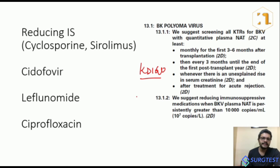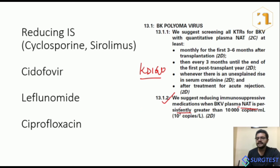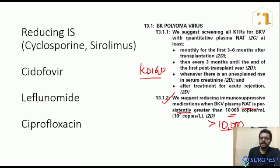The key threshold to remember: when plasma BK virus levels are persistently greater than 10,000 copies per ml, you can consider reducing the immunosuppressive therapy. The word 'persistently' is important, and you must remember the number — greater than 10,000 copies per ml. The mainstay of therapy in BK virus nephropathy is to reduce immunosuppressive therapy.